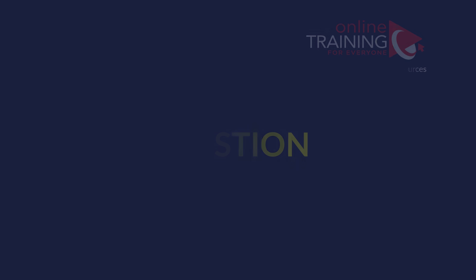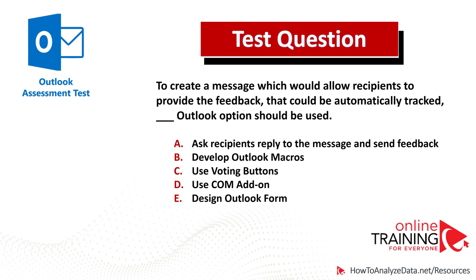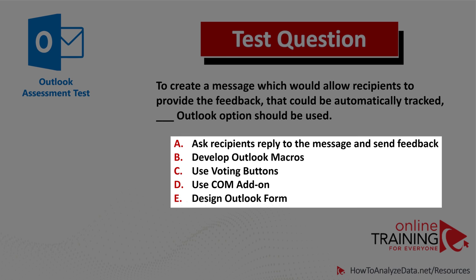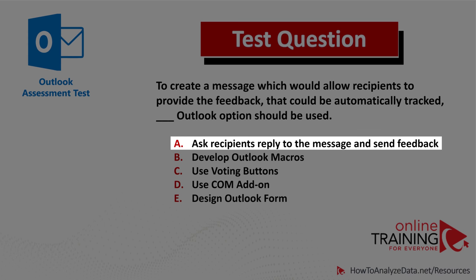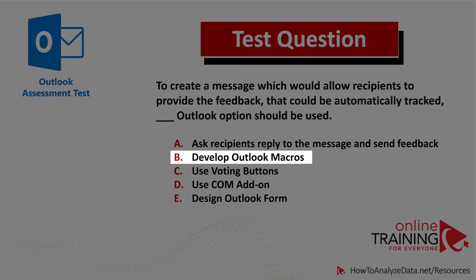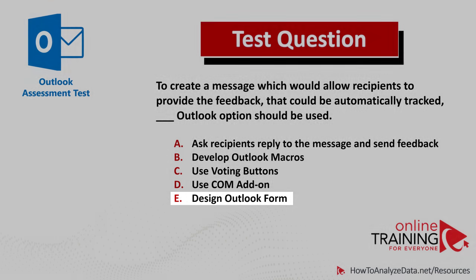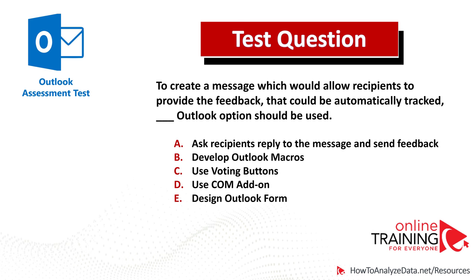Let's look at a very interesting question which tests your knowledge of Outlook features and capabilities. To create a message which would allow recipients to provide feedback that could be automatically tracked, which Outlook option should be used? There is a list of five options: Choice A, ask recipients to reply and send feedback; Choice B, develop Outlook macros; Choice C, use voting buttons; Choice D, use com-add-on; and Choice E, design Outlook form. Do you think you know the answer? Let's see if we can get to the correct answer together.